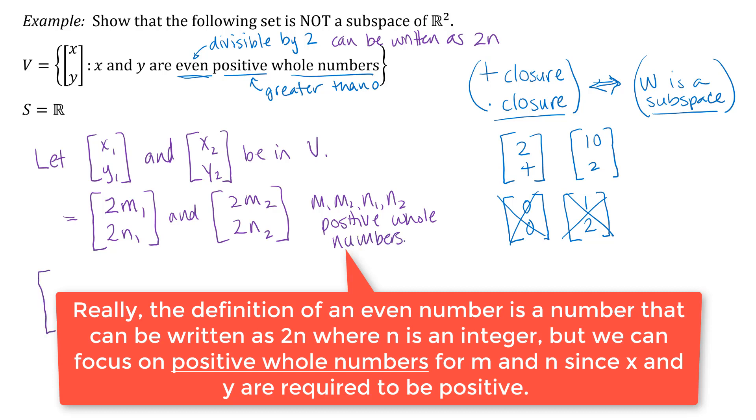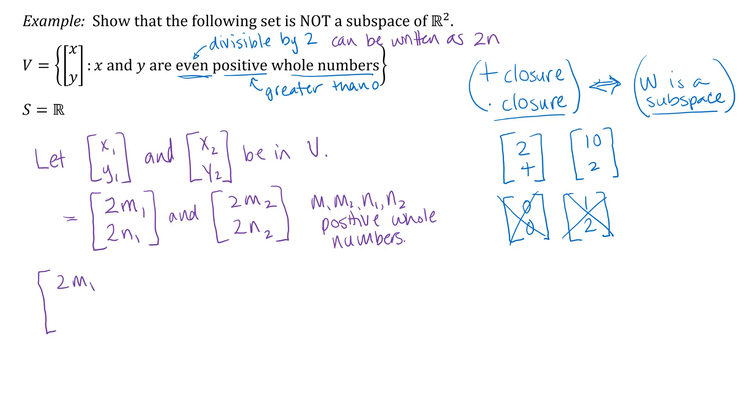And [2m₂, 2n₂] where the m's and n's are positive whole numbers. All right, and so if I add those two things together, what I want to check is whether their sum is in the set or not. So let's just go ahead and add them.